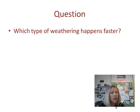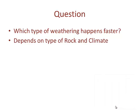So which type of weathering happens faster? It depends on two things: the type of rock and the climate you're in. More permeable rocks are going to weather away faster — things like limestone or porous rocks that have holes where water can seep in will erode faster than rocks with harder content. In climates that are very wet and very hot, rocks are going to weather away faster than in colder, drier climates.